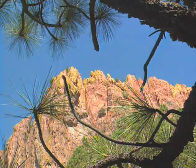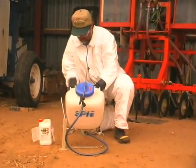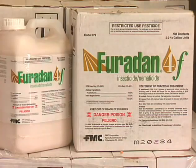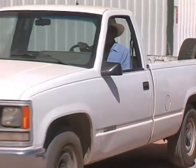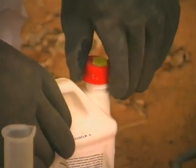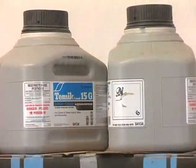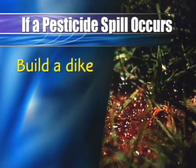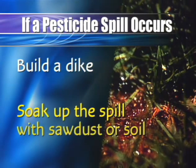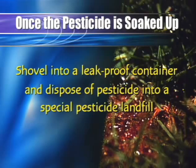One of the most important ways you can protect your environment is with the careful storage and transportation of pesticides. The recommended way to carry pesticides is to place the container in a plastic tub or bucket large enough to hold the contents of the original container should it leak or break. Secure the plastic tub in the bed of a pickup truck. Store pesticides in their original labeled container. The storage building should have a cement floor. Always store pesticides away from water or streams, in a cool, dry place out of direct sunlight. If pesticides are spilled, confine the spill by building a dike or by soaking up the spill with sawdust or soil. Once soaked up, shovel into a leak-proof container for disposal into a special pesticide landfill.